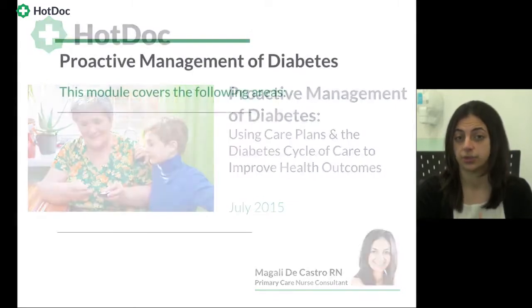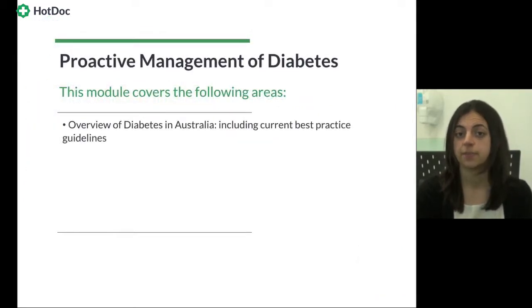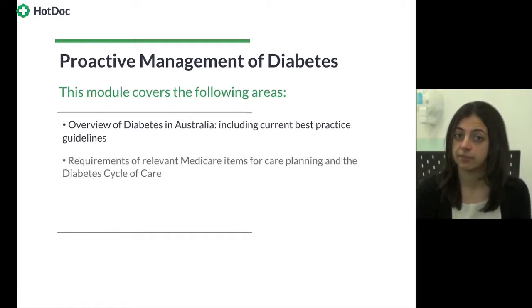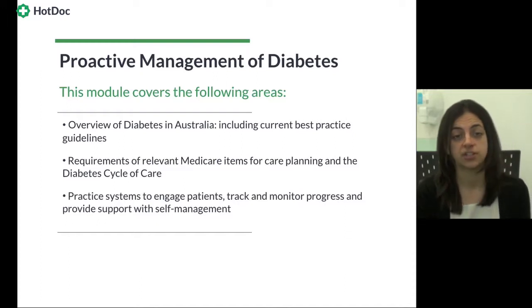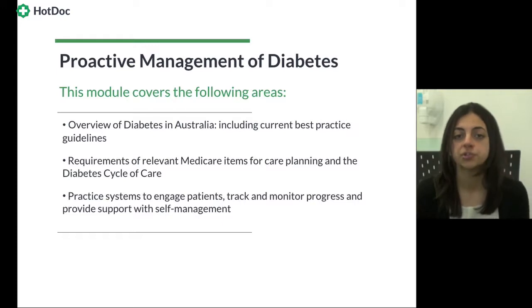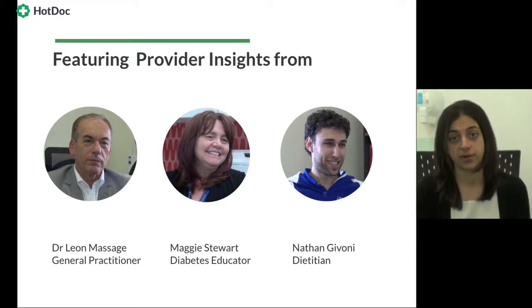This CPD module is divided into three sections. First is an overview of diabetes in Australia, including best practice guidelines. The second section covers requirements of relevant Medicare items for care planning and the diabetes cycle of care. In the third section, we look at practice systems to engage patients, track and monitor progress, and provide support with self-management. Throughout the module, we've also included tips and insights from other practitioners and allied health providers, highlighting the importance of working as part of a multidisciplinary team.